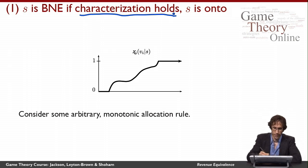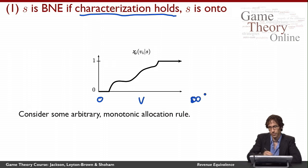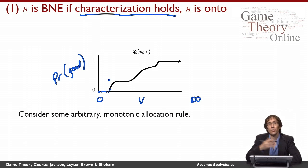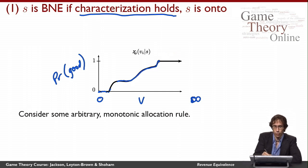Let's think about what this picture says. On the x-axis I have the valuation that an agent might have — this is the lowest possible valuation and this is an infinitely big valuation as we go further out. On the y-axis is the probability of getting the good. If the agent reports the lowest possible valuation, then he doesn't win the good. Because this rule is monotonic, as he reports higher and higher valuations he has an increasing chance of getting the good. It can flatten out, go up gradually, or go up discontinuously. And if it ever hits one, it has to stay at one because it's monotonic.